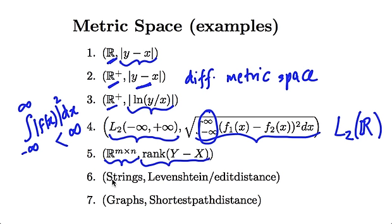Here's an even funkier example. It's the set of all strings. So these are just strings of characters. And the distance is the Levenstein or edit distance. And that is just defined as the smallest number of character insertions, deletions or substitutions that one has to make to transform one character string to another. Some of you might have seen this before if you did your undergrad in computer science.